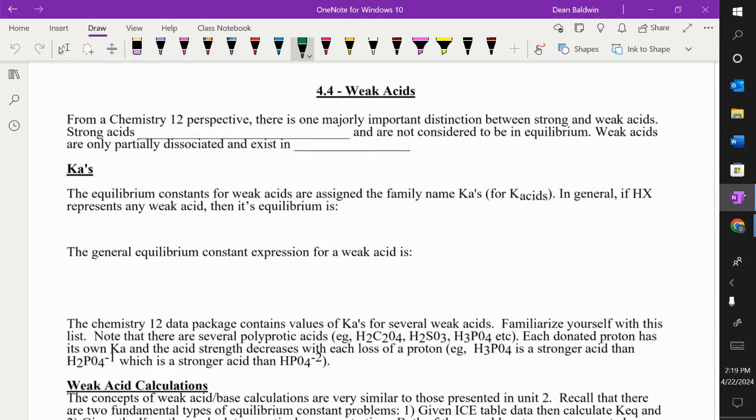So, we know strong acids dissociate 100%, all right? Weak acids only partially dissociate and therefore are in equilibrium. And instead of calling it KEQ, which we could, we call it KA for the acid because we come up with names for everything.